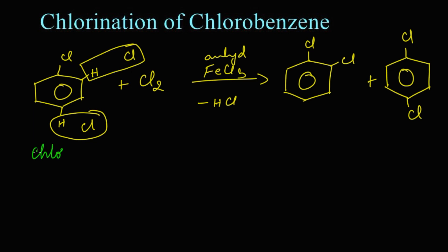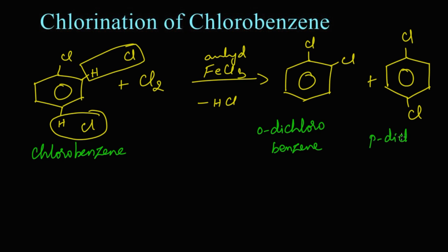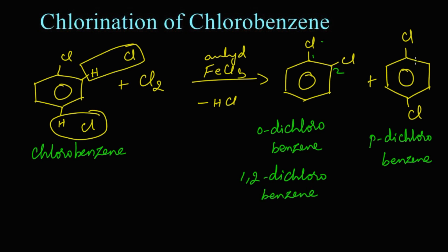When chlorobenzene is chlorinated, we get a mixture of ortho dichlorobenzene and para dichlorobenzene as products. The IUPAC name of ortho dichlorobenzene is 1,2-dichlorobenzene, since chlorines are on the first and second carbons. Para dichlorobenzene has chlorines on the first and fourth carbons, so it is known as 1,4-dichlorobenzene.